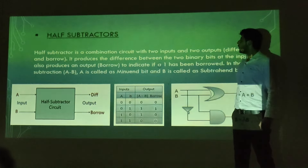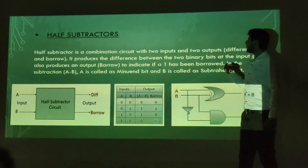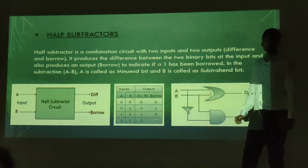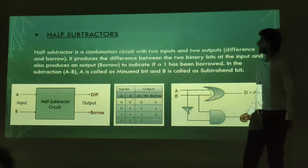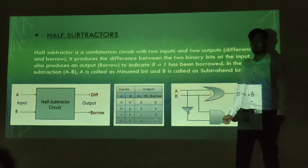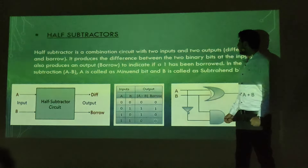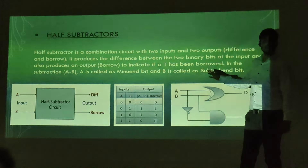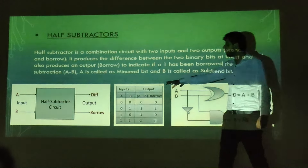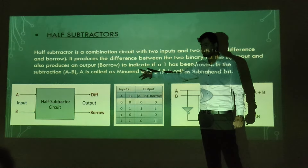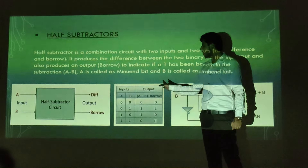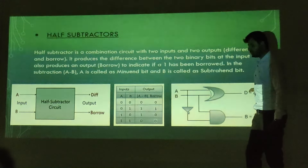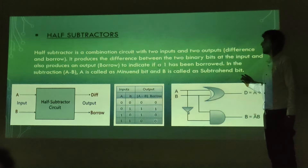Next is the half subtractor. A half subtractor is a combinational circuit with two inputs and two outputs: difference and borrow. It produces the difference between two binary bits as input and also produces a borrow output to indicate if a one has been borrowed. It is also called the minuend input. The diagram shows two inputs A and B and two outputs: difference and borrow. This is the truth table and Boolean diagram of the half subtractor.